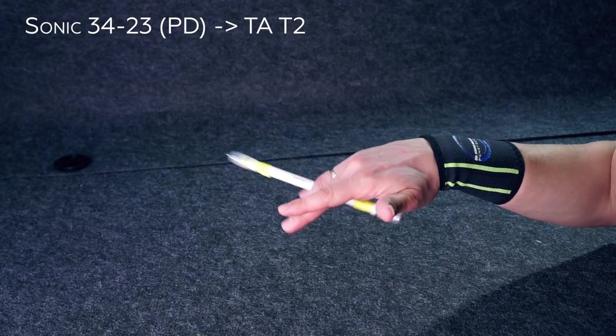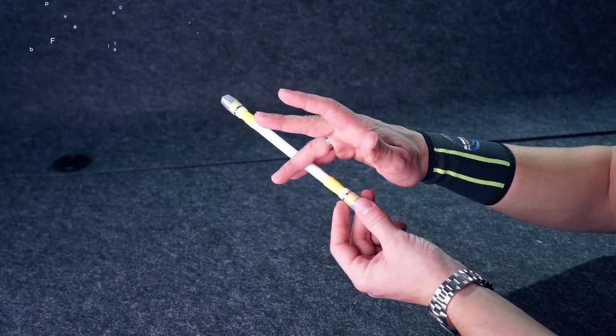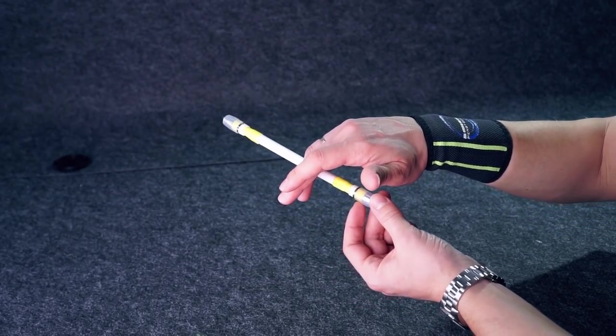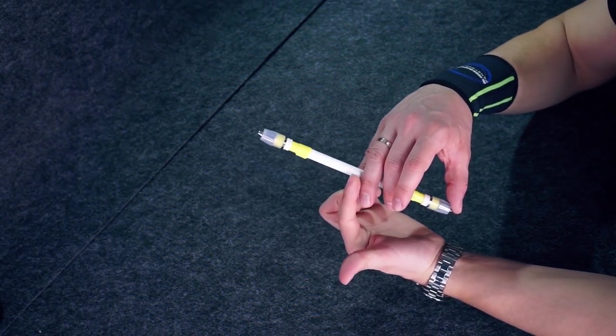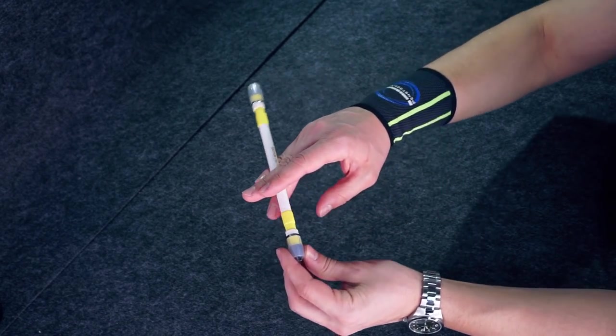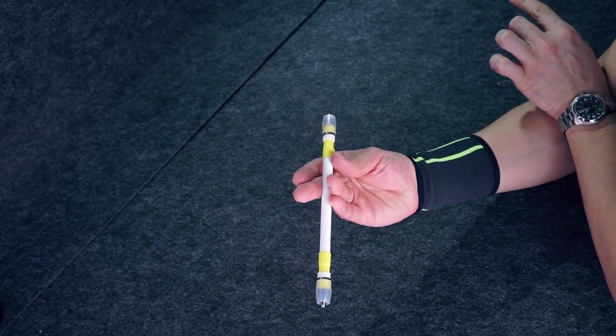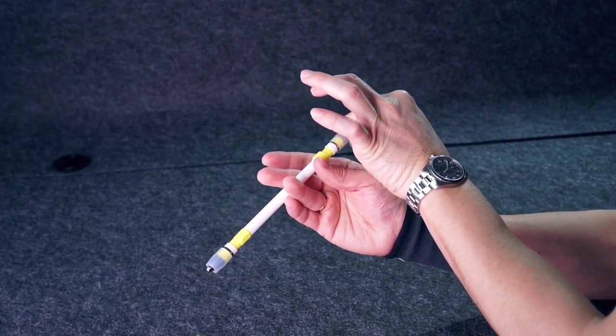Sonic 3 4 2 3 palm down to Thumbaround T2. You start with Sonic palm down in slot 3 4. Hold your pen closer to one of caps, so its bigger part would be from the outer side of your hand. When your mod changes slots to 2 3, turn your wrist palm side and at the same time move your thumb towards it, close to one of caps. Repeat this movement for several times till you feel confident about it.